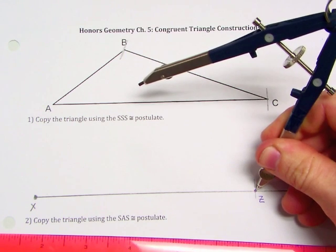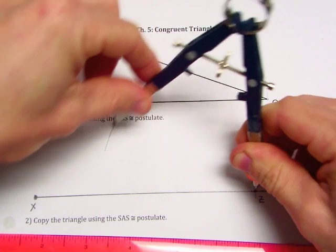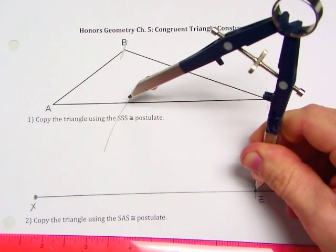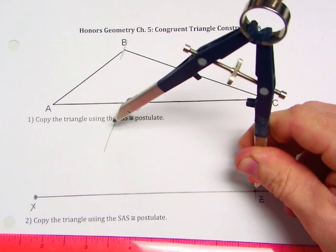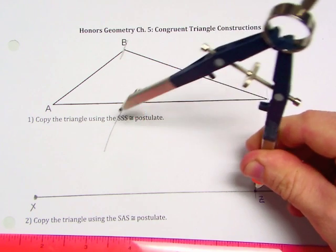And then from point Z, which is the corresponding point, we're going to make an arc. We'll make it a little bit bigger here because we don't know exactly where that corresponding point for point B is going to be. It's somewhere, however, on that arc.